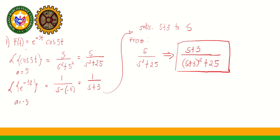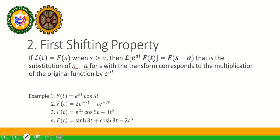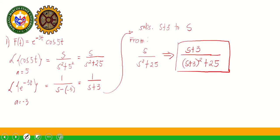To recap the first shifting property: get the Laplace transform of the non-exponential function, then get the Laplace transform of the exponential part, and whatever that gives you, substitute it for S in the first transform. Let's try Example 2: F(T) = 2e^(−7T) − T·e^(−7T).